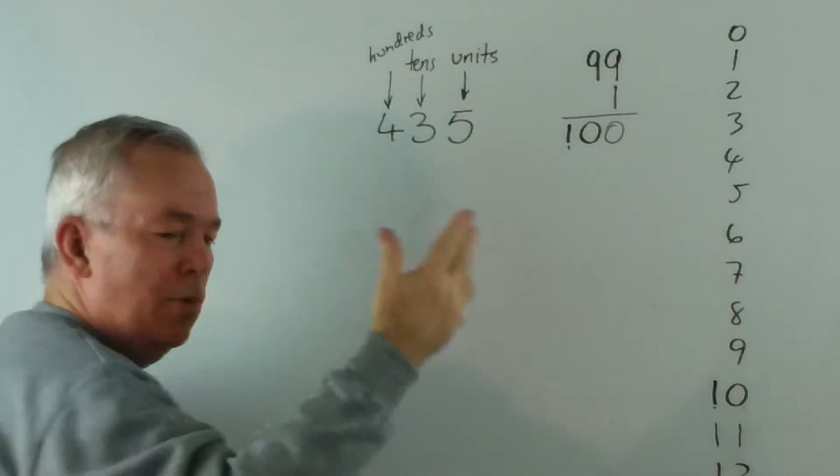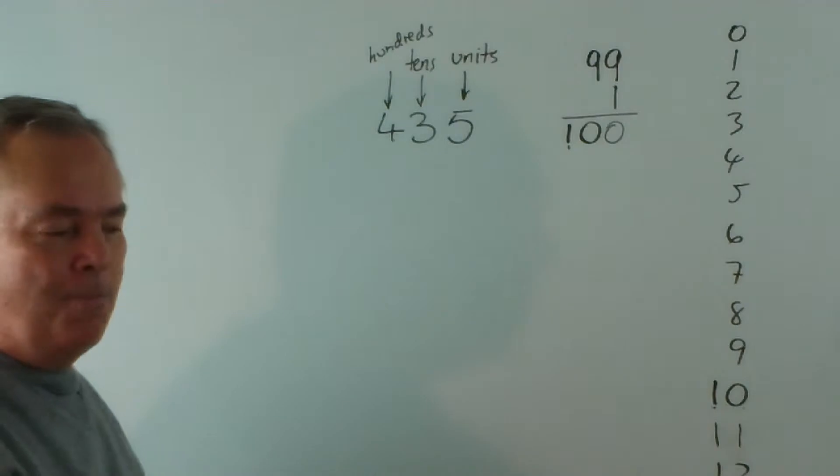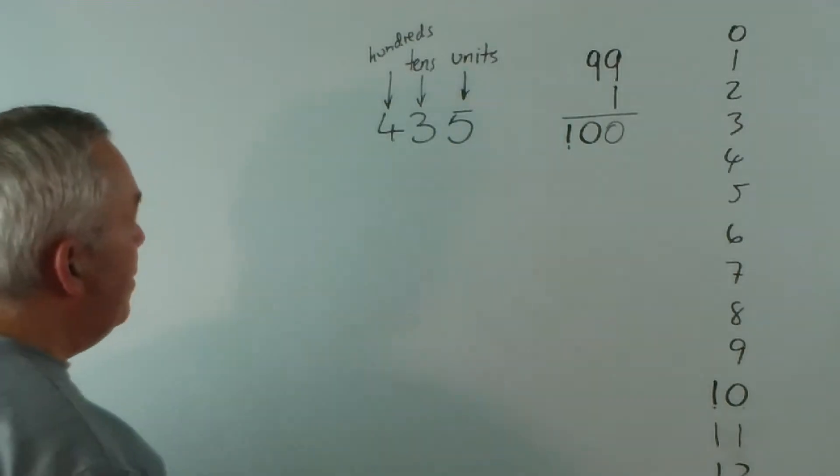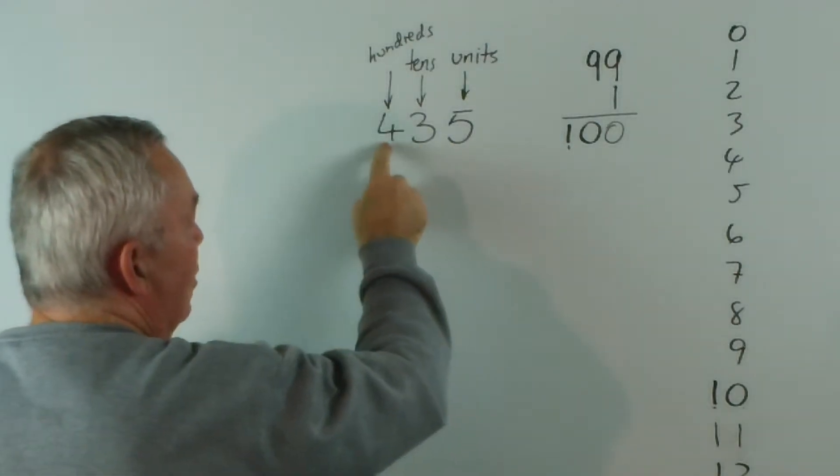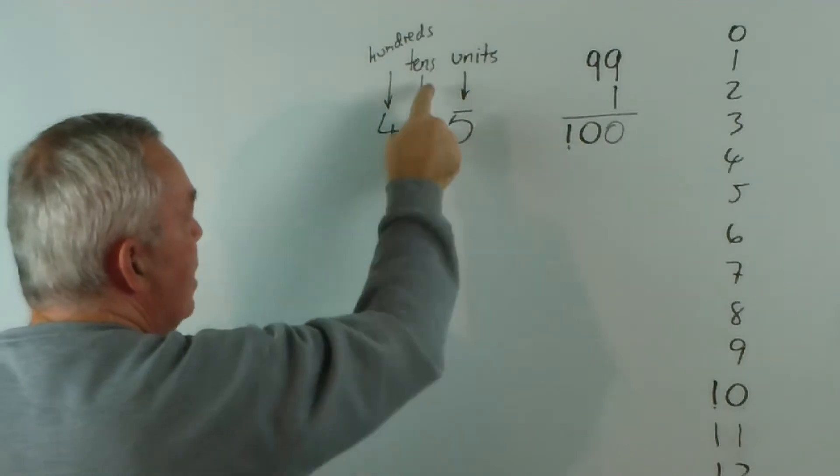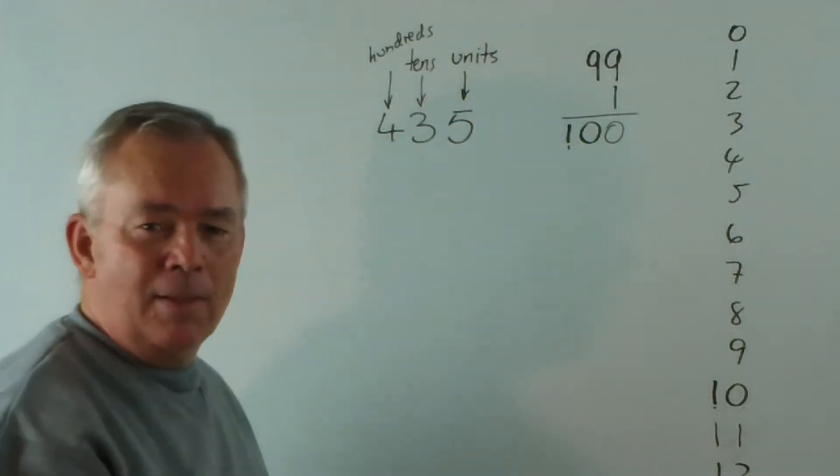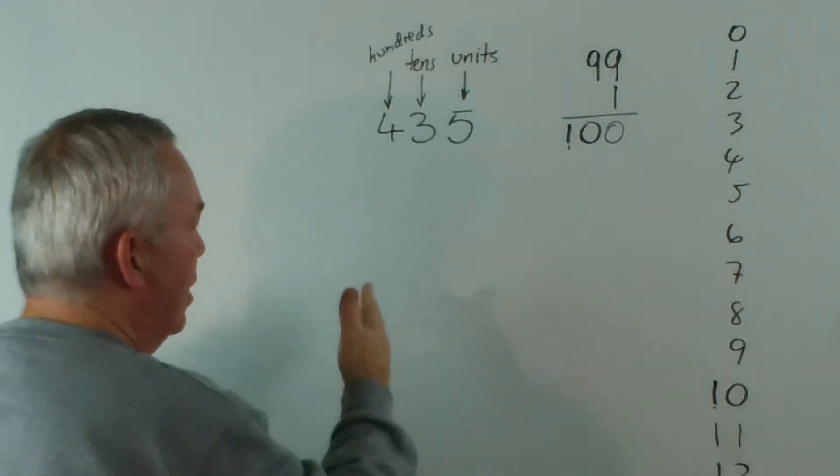Now, we never bother saying the units. Everyone knows we're talking units. I've never talked about five units of apples; it's just five apples. And although we say four hundred, we don't say three ten. We've got a word for three ten, and we call it thirty. So all of our tens end with a T. It's just part of the etymology of the words and the language, how they've grown over history.